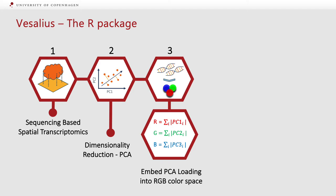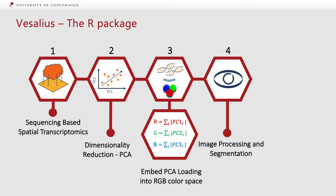Now that we have colors, but also coordinates, we can rebuild images. And now that we have these images, we can start applying image processing techniques, such as histogram equalization or smoothing, and finally segmentation.